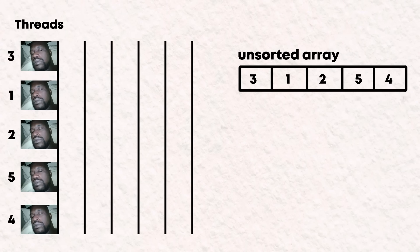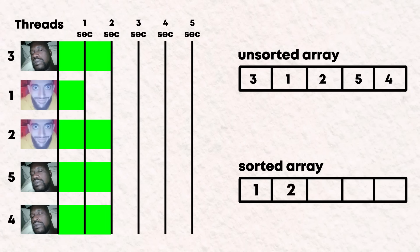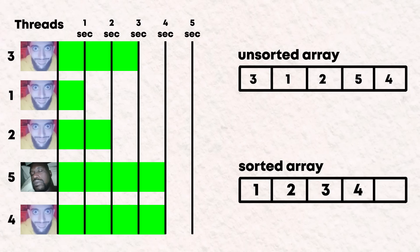Number 2, Sleepsort. Sleepsort is a time-based algorithm where each element in the array is given its own special thread, and each thread sleeps for a duration matching the value of its corresponding element. Once all the threads have finished snoozing, they wake up one by one and print their element's value. Since the thread with the least nap time will wake up first and the largest will wake up last, this sorting technique will always sort in ascending order, resulting in a sorted list.